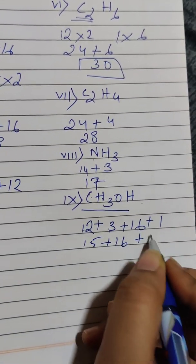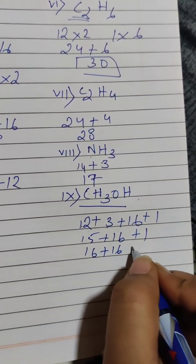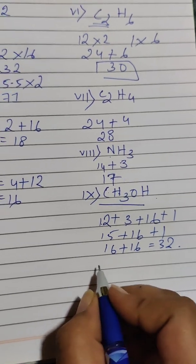Plus 16, plus 1. So 16 plus 15, which is thirty-two.